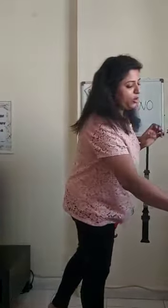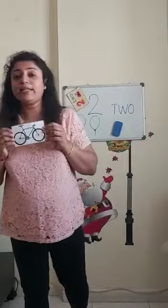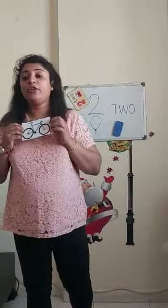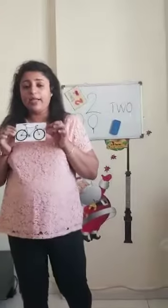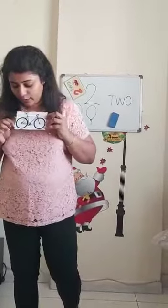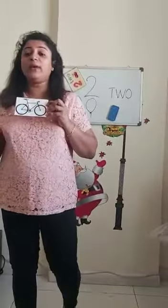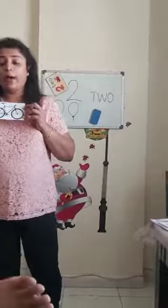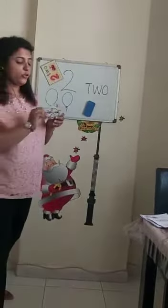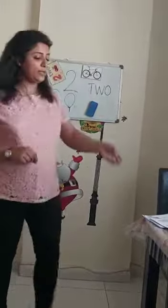Now tell me, what is this? Cycle. It's a bicycle. Do you know how many wheels a bicycle has got? 2. Count: 1, 2. So that's why it's called a bicycle. Bicycle has got 2 wheels.